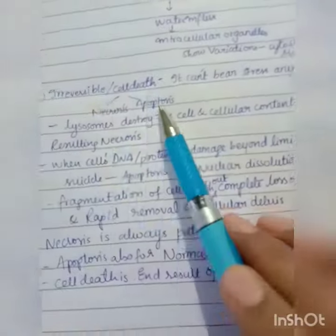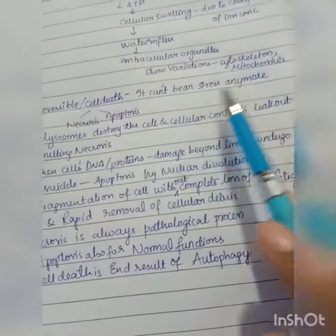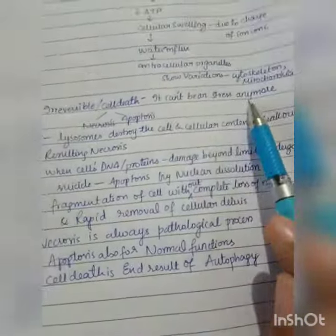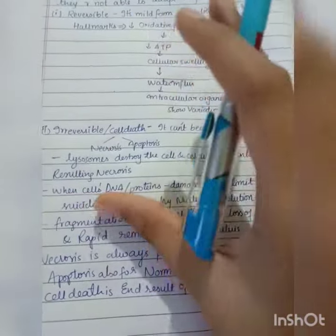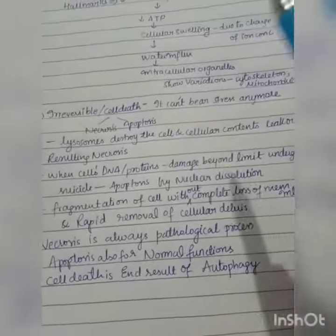Now let's see irreversible cell death. It can't bear stress anymore. Reversible injury has a mild form of stress, but irreversible injury has so much stress the cell can't bear it anymore.